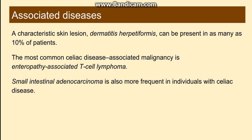Celiac disease is associated with a skin lesion known as dermatitis herpetiformis in approximately 10% of patients. The rate of malignancy is also higher in celiac disease, with the two major associated malignancies being enteropathy-associated T-cell lymphoma and small intestinal adenocarcinoma. Treatment primarily involves restriction of gluten from the diet, and symptoms mostly resolve with a gluten-free diet.